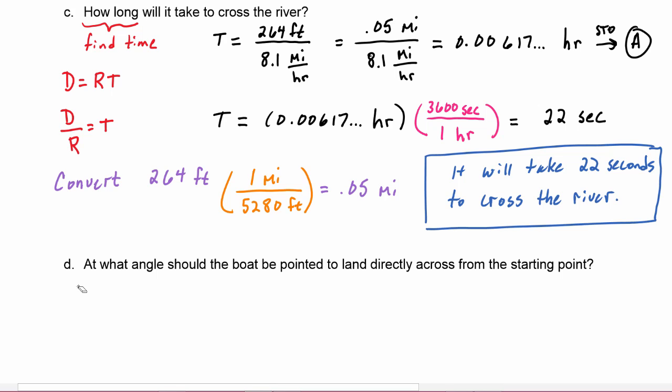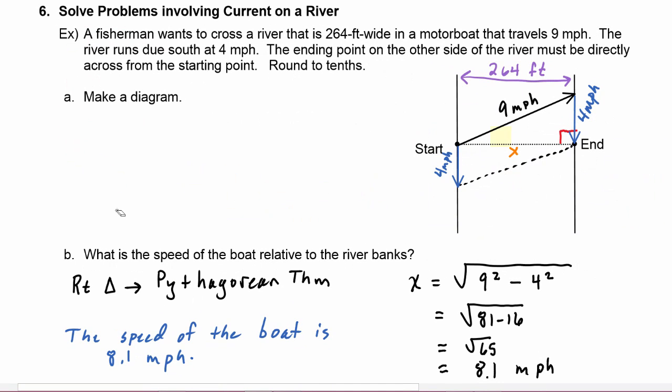Finally, we are asked at what angle should the boat be pointed to land directly across from the starting point. So let's go back to our picture for just a moment. This question is asking us to find this angle in the diagram. And because we have a right triangle here, we know that we have SOH CAH TOA available to us. And we were given this four miles per hour here and the nine miles per hour here, so we would want to use those in our calculation. The four is the opposite leg, the nine is the hypotenuse, so we will want to use sine function.